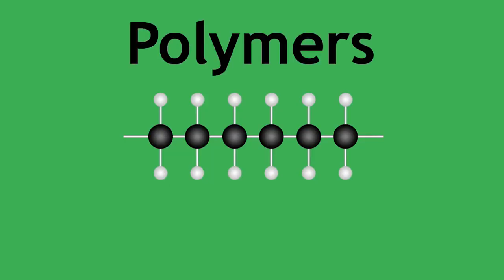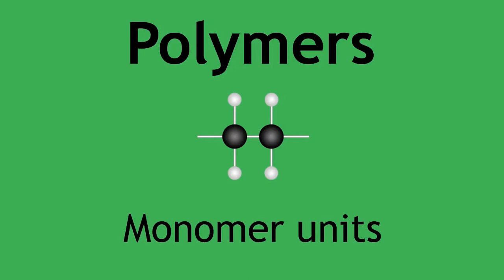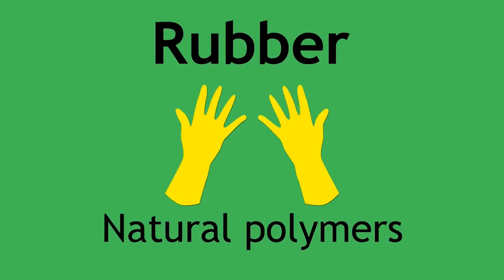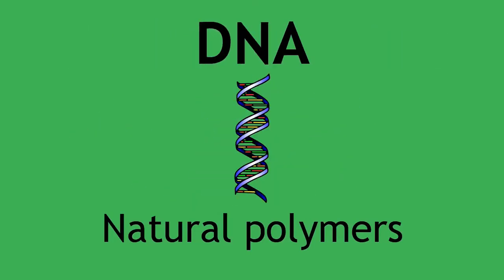As you now know, polymers are long chain organic molecules made by repeating monomer units. There are a number of natural polymers in life such as rubber, and even in our own body we have natural polymers such as proteins, carbohydrates and DNA to name just a few. We will focus the rest of this tutorial on synthetic polymers.